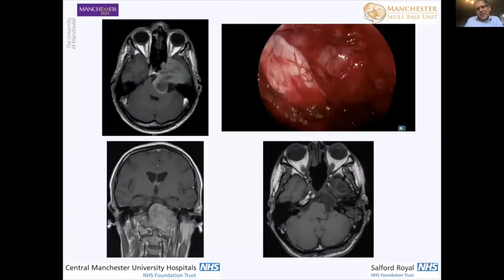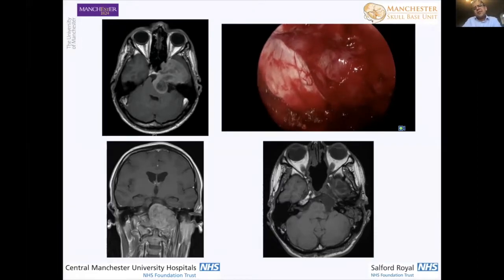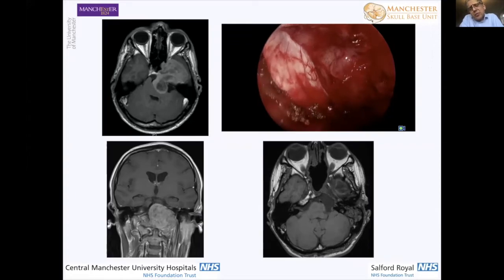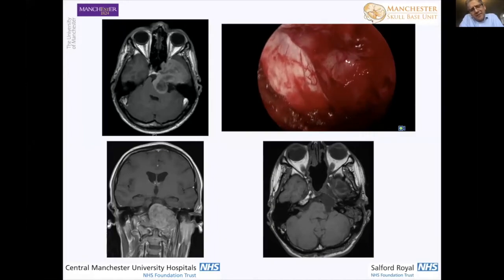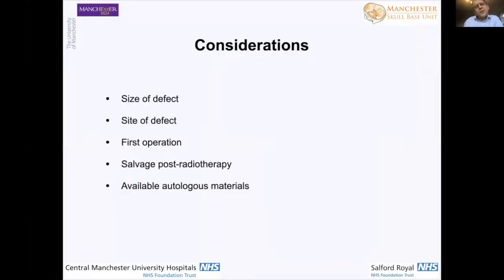Your usual reconstruction size of flap isn't adequate and so you're looking at modifying techniques. This is a pretty substantial chondrosarcoma. The video above shows post-resection, looking out towards the left jugular foramen with that pulsation. That sort of defect gives you a different reconstructive challenge than the more straightforward midline tumours in the initial slide.